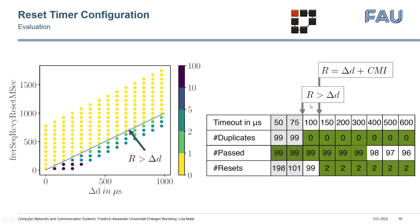Our simulations observe the number of passed duplicates using the vector recovery algorithm for different reset timeout values and delta d values. As a minimum requirement, we derived that a timeout has to be longer than delta d — all simulated configurations above this line successfully prevented the passing of duplicates. A small delta d can result in too many resets, whereas the optimal configuration prevents this behavior. Values significantly higher than our solution may discard new packets. The guidance is to set the timer value equal to delta d plus CMI.